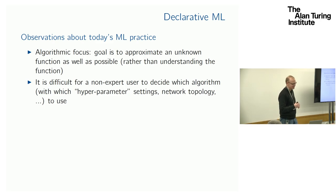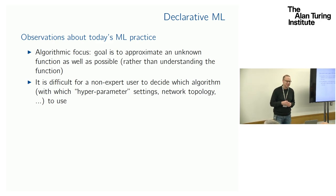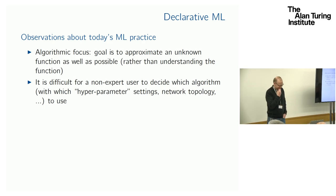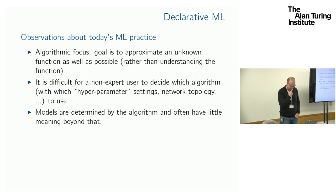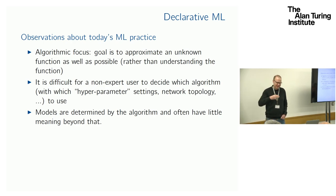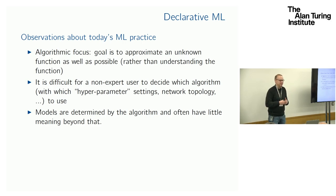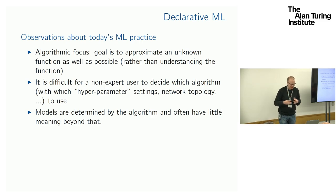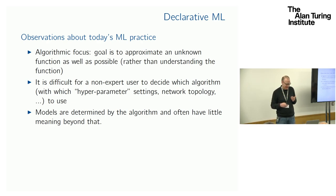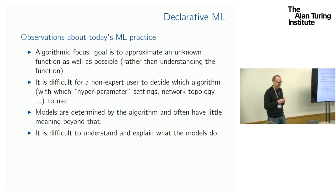Many people apply these things who don't know what they are doing — including me, you may say — and that makes it difficult. The models we generate are very often determined by the algorithm. We pick an algorithm and then some model comes out, and we're not thinking about what that model might be. We're thinking about which algorithm we use, or maybe just using whatever everybody else is using, and then we get some model. We put very little emphasis on it, and we usually don't understand what the models are actually doing, and we can't explain what they do.